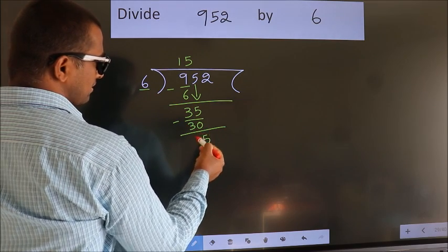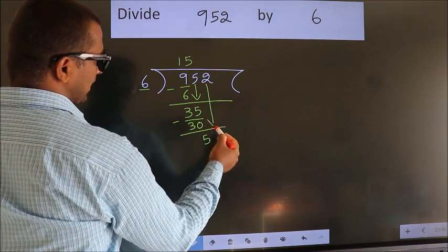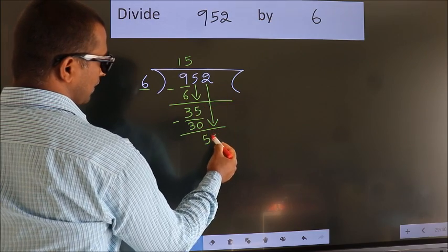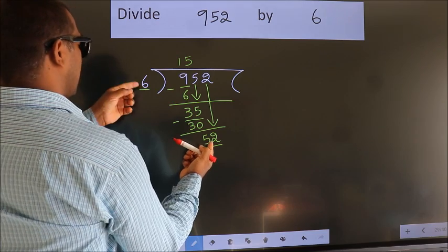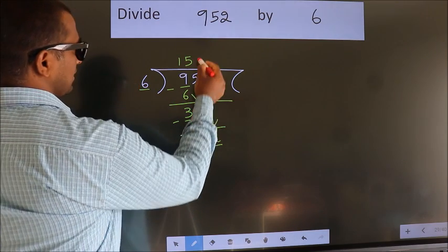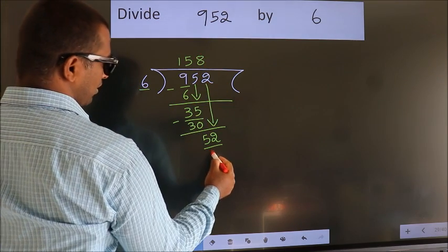After this, bring down the next number. So 2 down. So 52. A number close to 52 in the 6 table is 6 times 8 is 48.